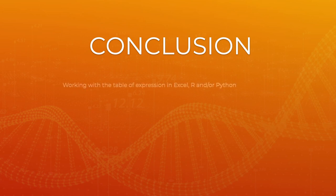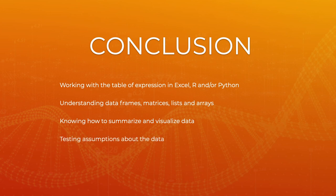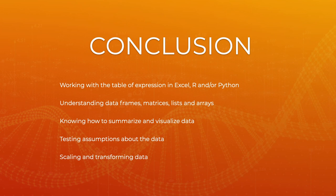So what are some of the conclusions from today's session? You saw how to take the table of expression and start working with it in Excel, R, and Python. You should be able to understand the difference between data frames, matrices, lists, and arrays, and know how to summarize and visualize data using box plots, histograms, bar plots, and heat maps. You can start testing assumptions about your data: how comparable are different samples, how they differ overall, and where specific patterns can be found. You will also see some steps to scale and transform data. The bulk of these methods are described in detail in the online tutorial, so I encourage you to go through those tutorials and practice. In our next session, we will talk about principal component analysis.